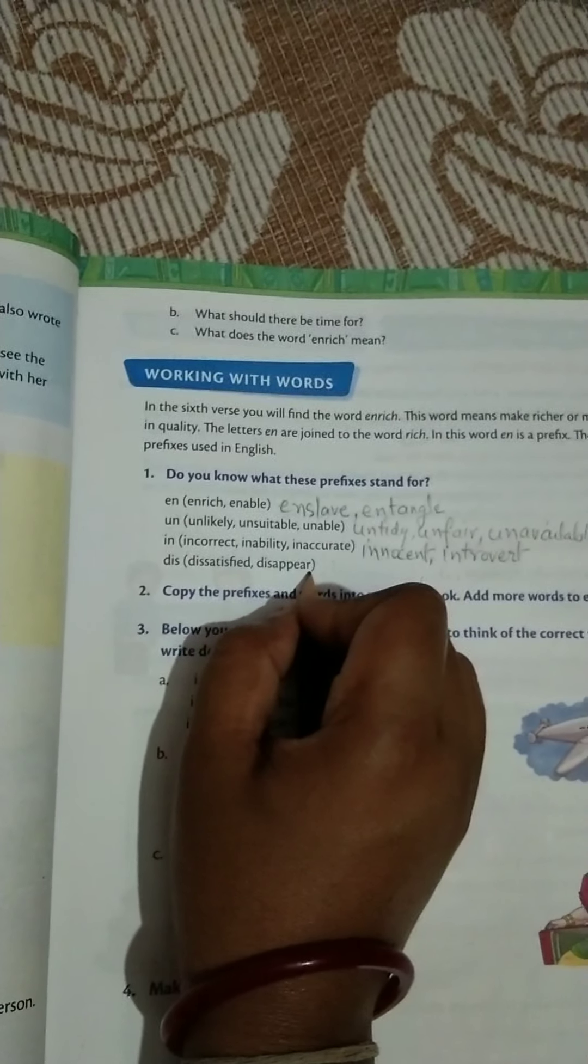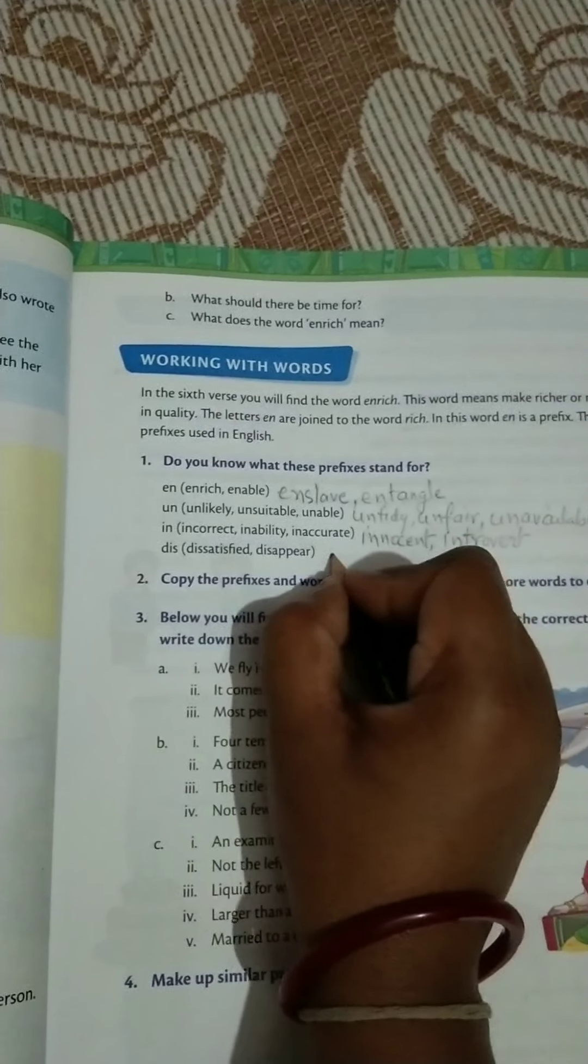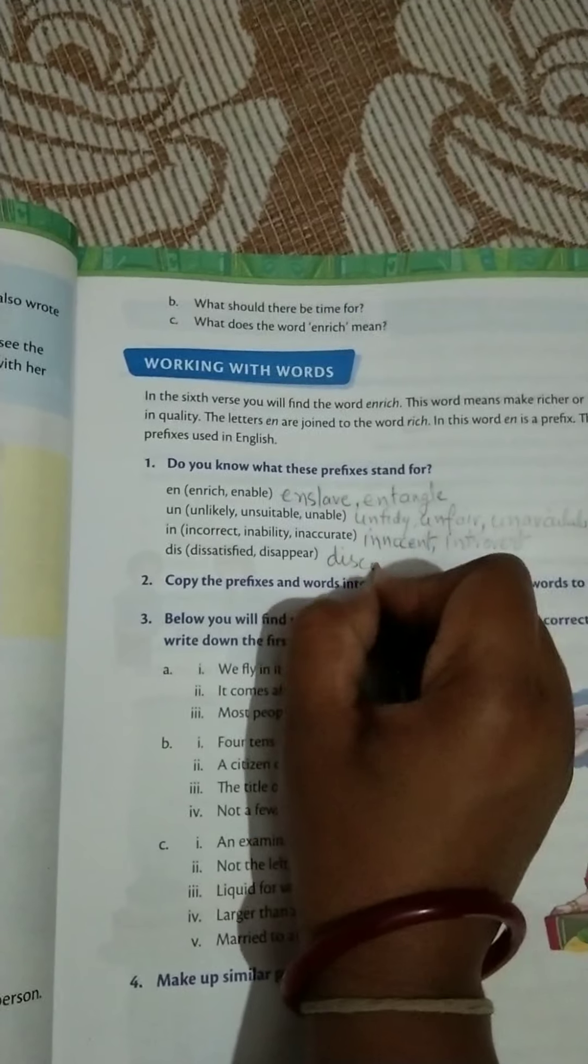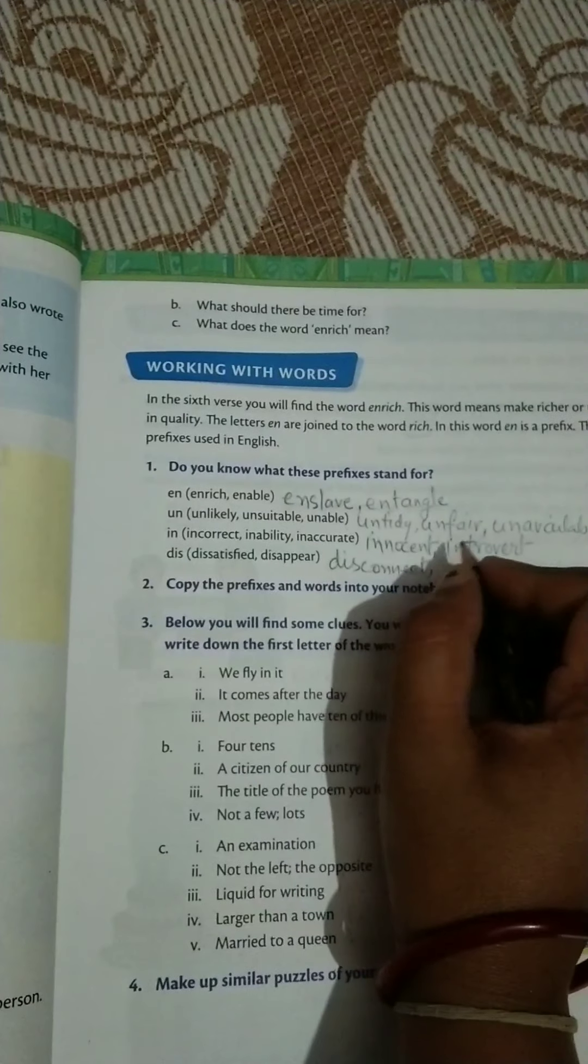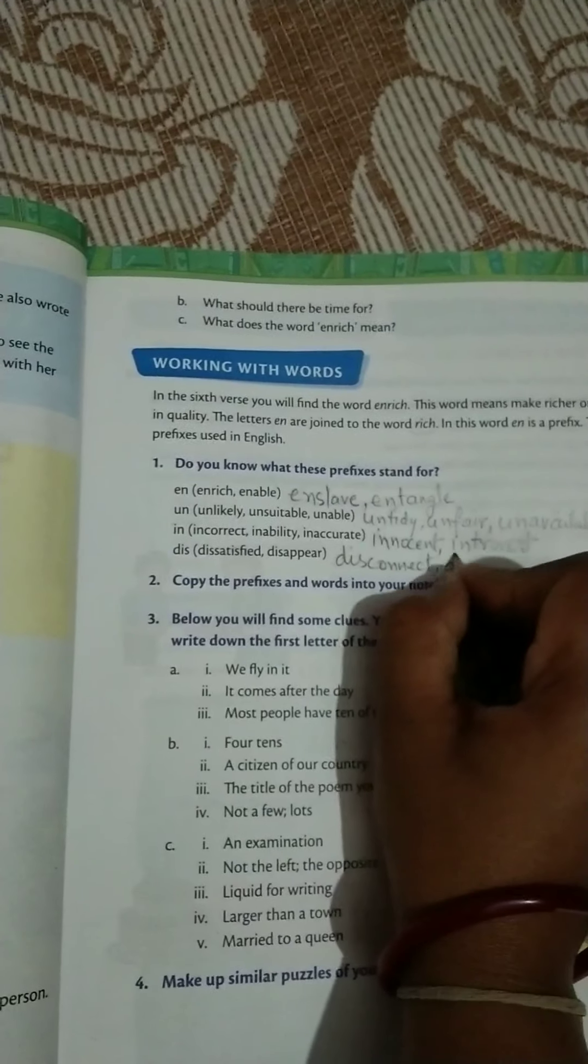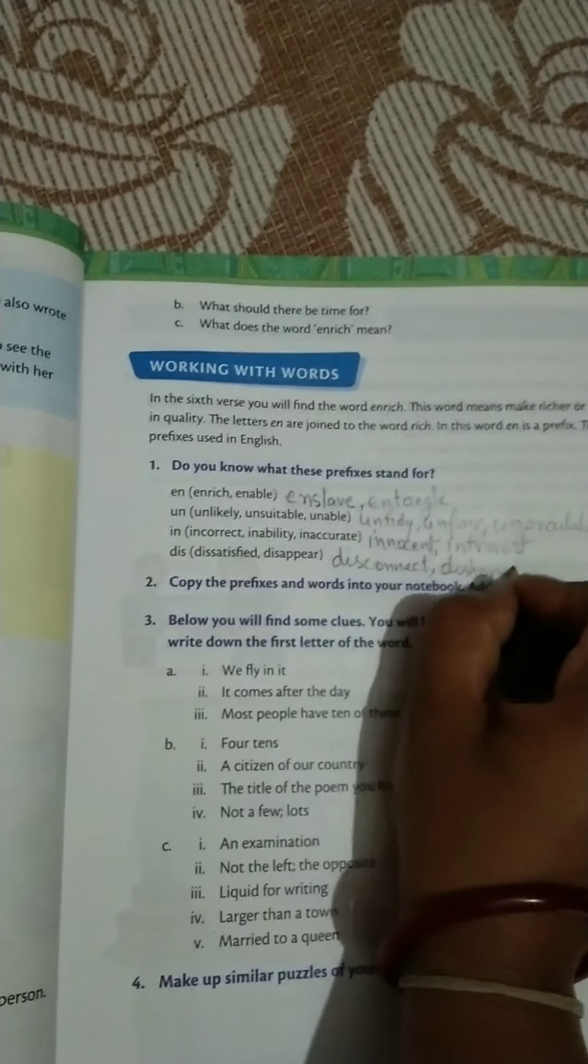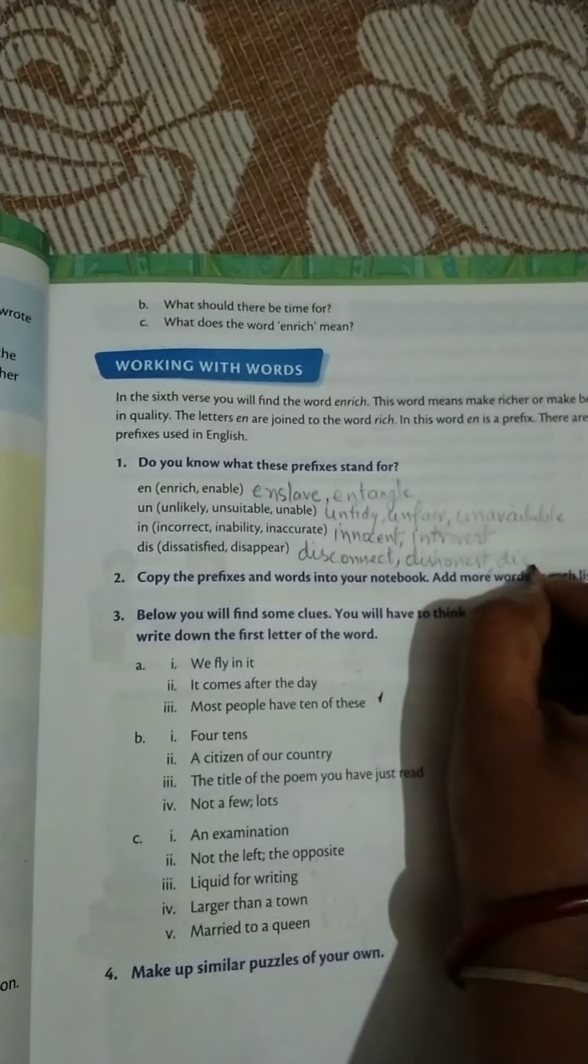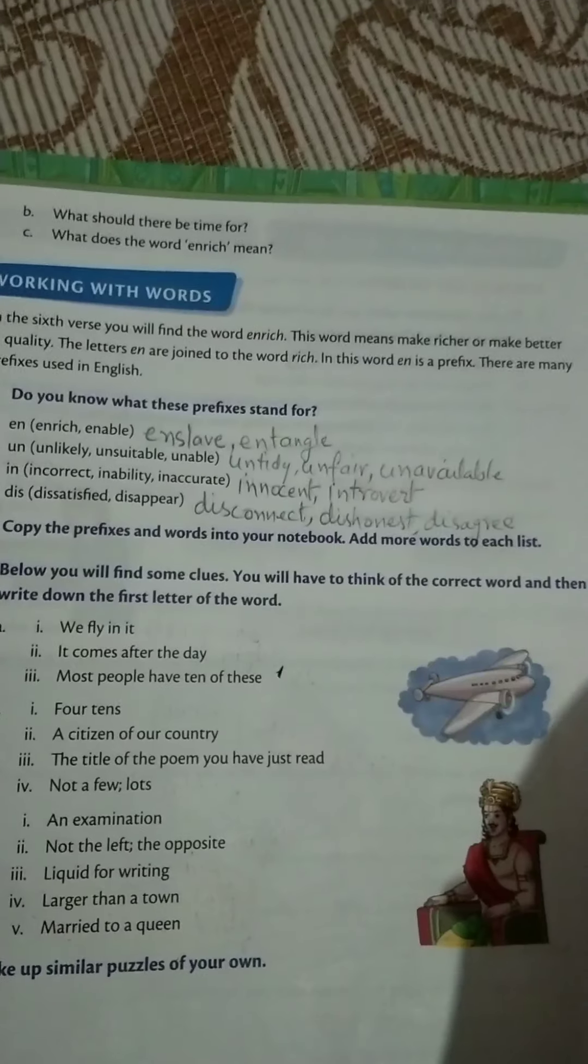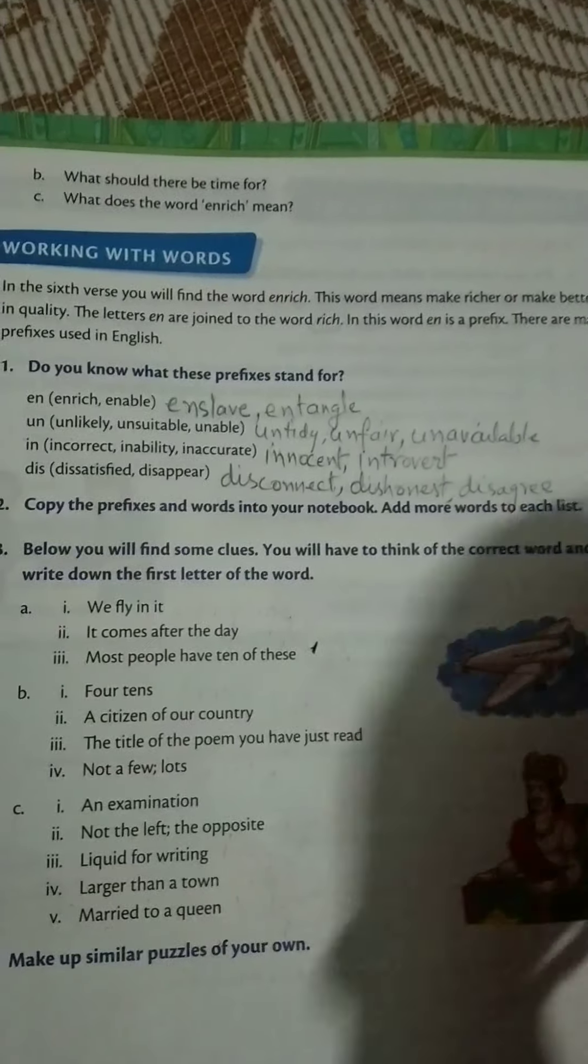Next is dissatisfied and disappear. Like this, other words are disconnect, dishonest. Complete it like this. Come to the next.